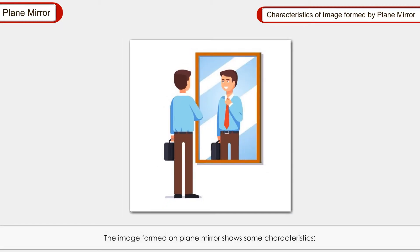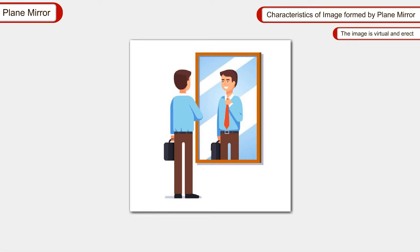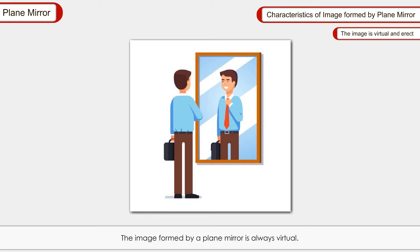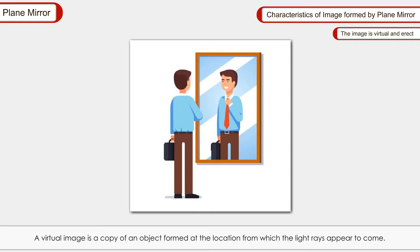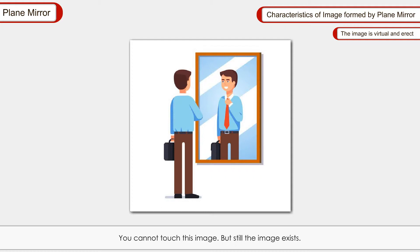Characteristics of image formed by a plane mirror: The image is virtual and erect. The image formed by a plane mirror is always virtual. A virtual image is a copy of an object formed at the location from which the light rays appear to come. It is upright and of the same shape and size as the object it is reflecting. You cannot touch this image, but still the image exists.